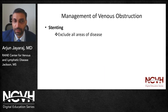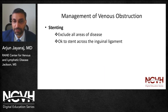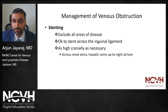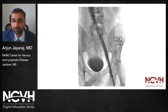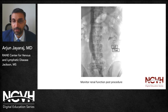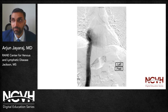Important principles regarding stenting: it is essential to exclude all areas of disease. It is okay to stent across the inguinal ligament. Stent as high cranially as needed. This is an example of a patient who was stented all the way from the common femoral vein, across the iliac confluence, across the renal veins, across the hepatic veins, all the way to the level of the right atrium.